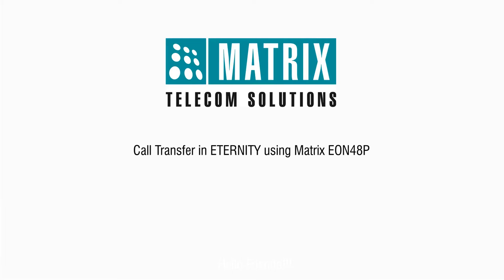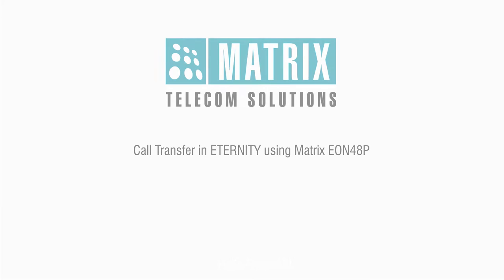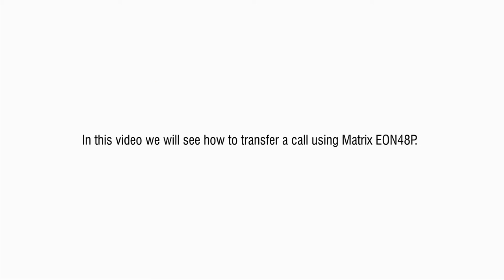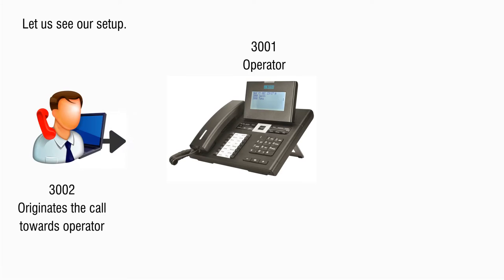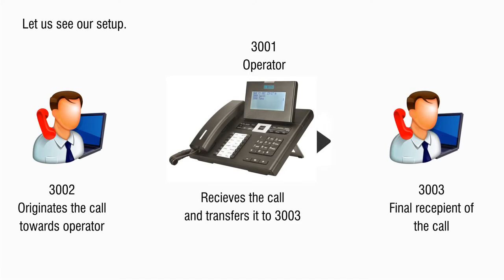Hello friends, welcome to Matrix demo videos. In this video, we will see how to transfer a call using Matrix EON 48P. Let us see our setup: we have an operator having number 3001, and 3002 originates the call towards the operator, which receives the call and transfers it to 3003, which is the final recipient of the call.